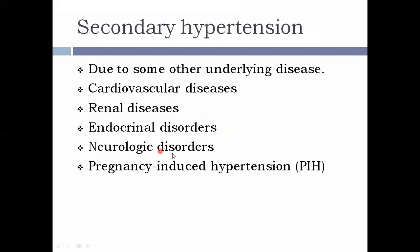Neurological disorders such as increased intracranial pressure and hyperpituitarism can also cause secondary hypertension. The next is pregnancy-induced hypertension, seen in around 5 to 10 percent of expectant mothers. It may lead to hypertension and pre-eclampsia, also known as toxemia of pregnancy.